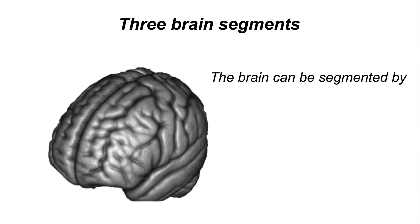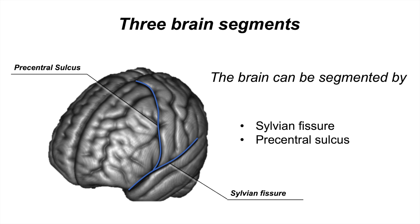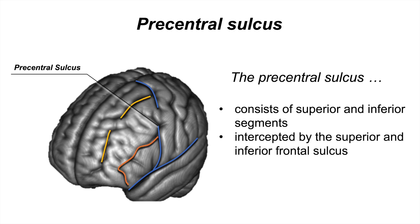The lateral surface of the brain can be divided into three segments, referring to the Sylvian fissure and the precentral sulcus. The precentral sulcus can divide the Sylvian fissure into the proximal and distal Sylvian fissures. The precentral sulcus usually consists of the superior and inferior segments and is intercepted by the superior and inferior frontal sulcus.